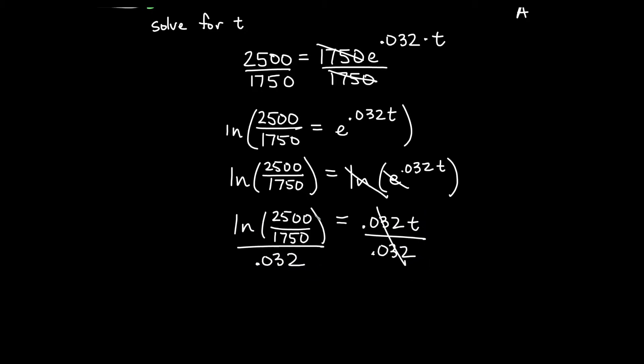And that will give us our answer for t. t will be ln of 2500 over 1750 divided by 0.032. So let's go ahead and write that. So our t is equal to ln of 2500 over 1750, all of that divided by 0.032.